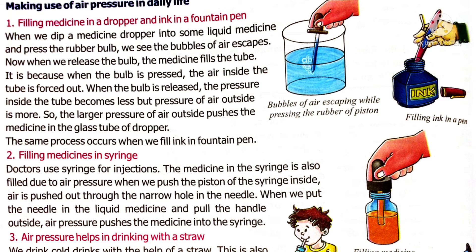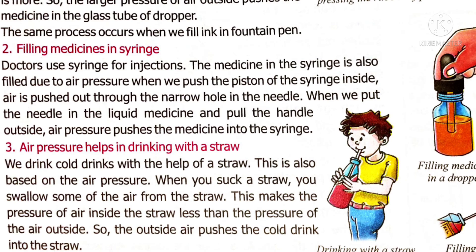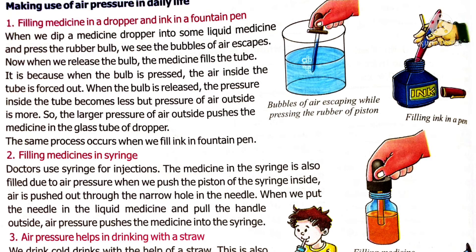The same principle is used to fill medicine in a dropper. Now, when you drink juice with a straw — a long plastic tube-like structure kept inside the juice — you suck the straw. When you suck the straw, air present inside the straw goes into your mouth. Air inside the straw becomes less, while air outside over the liquid is more. Because of this pressure difference, air pressure pushes the juice inside the straw, and thus we can drink cold drinks with the help of a straw.